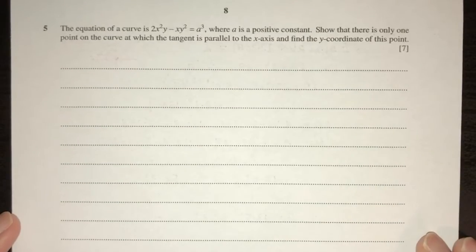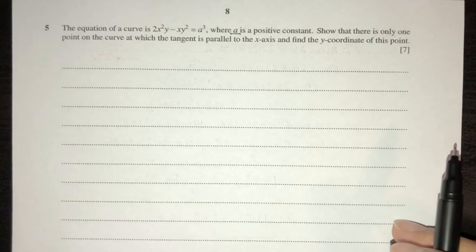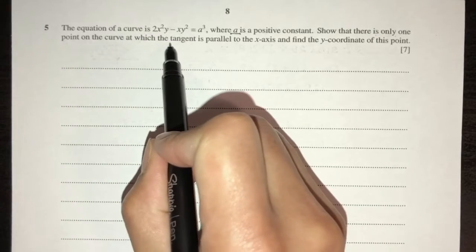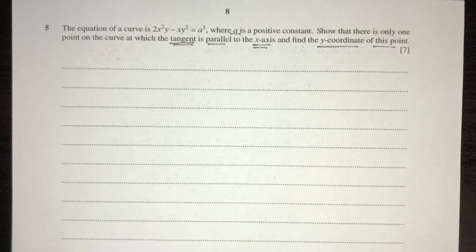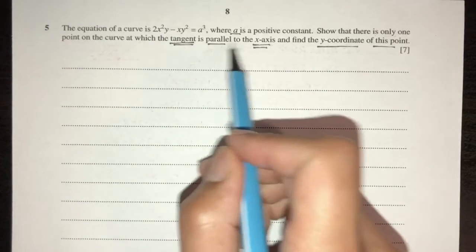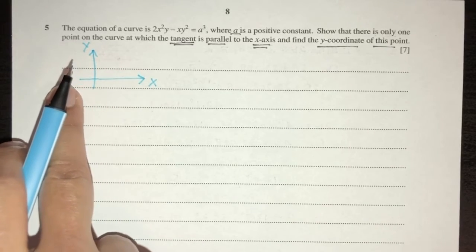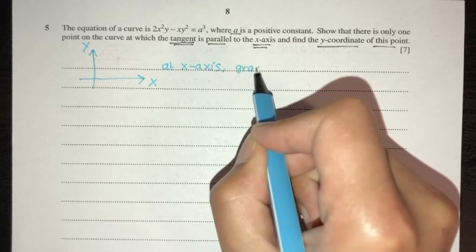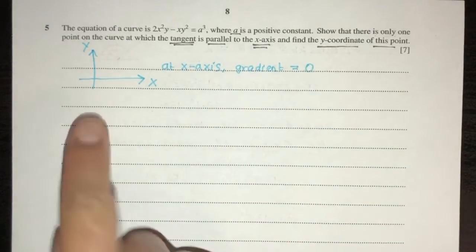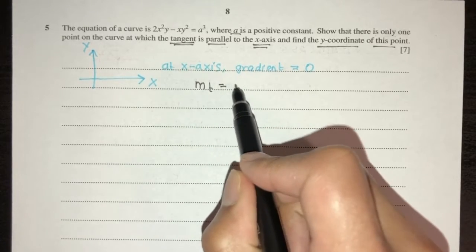Question five: the curve equation is 2x^2·y minus xy^2 = a^3 where a is a positive constant. We must show there is only one point where the tangent is parallel to the x-axis, and find the y-coordinate. A tangent parallel to the x-axis is horizontal, so its gradient equals zero, meaning dy/dx = 0. We need to find dy/dx using implicit differentiation.